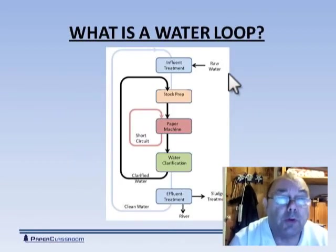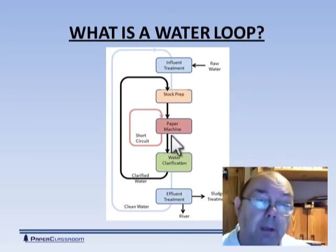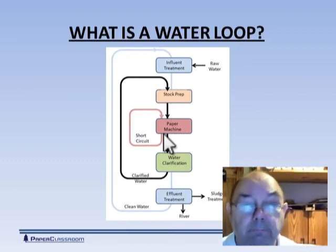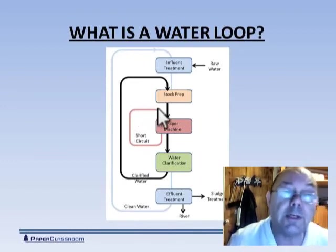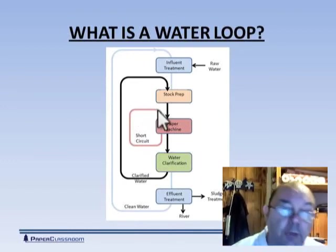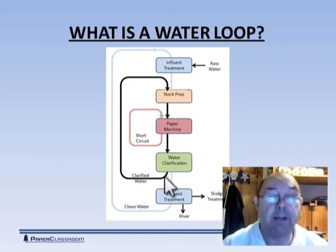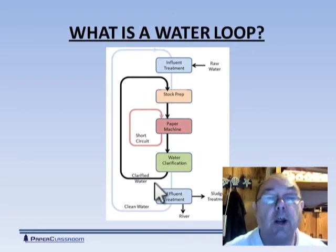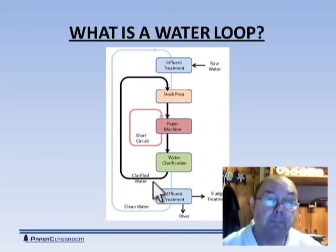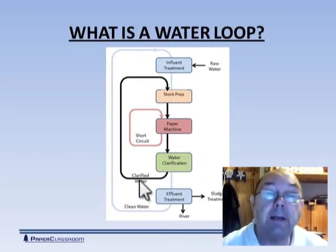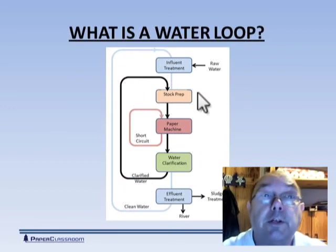So what is a water loop? Typically, here we have a paper machine. The water drains through the wire — the backwater or the white water — and we collect a good portion of that and use it to re-dilute the stock coming onto the machine. We don't use all of it. More of that water can go through a clarification process, remove some of the fibre that came through the wire and collect it, then put the fibre back in the system and reuse the water, perhaps in the stock prep area, or maybe to dissolve or disperse some chemicals.